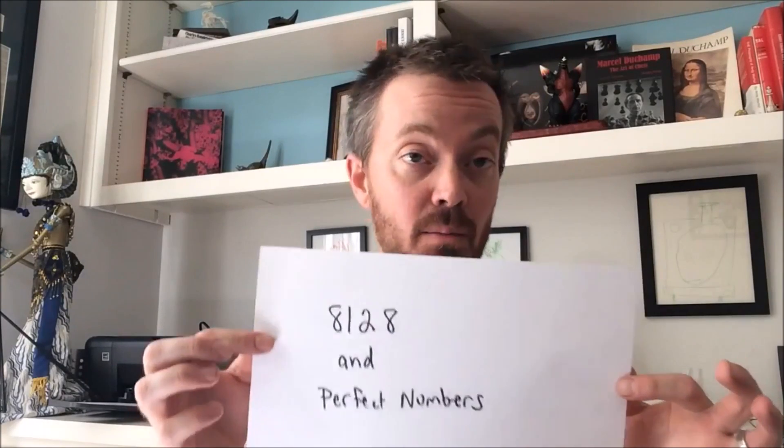So the next number we're going to take a look at will be the number 8128. And this is actually what's known as a perfect number. So there's actually an interesting connection between perfect numbers and Mersenne primes that we just saw as well. So let's look at some examples of what a perfect number is. And we'll talk about that connection between the Mersenne primes and perfect numbers.